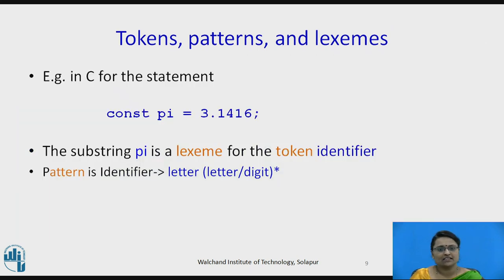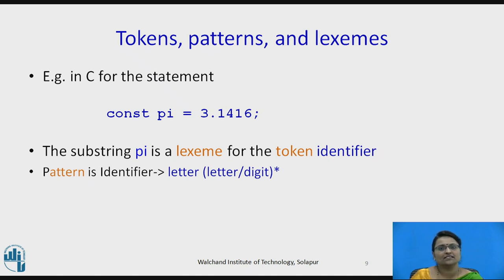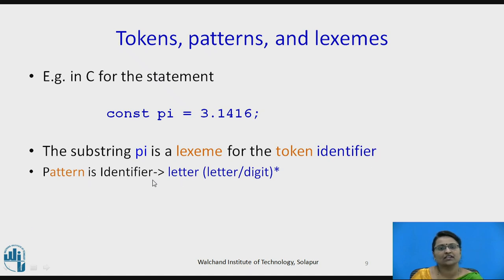Consider this C statement: const pi equals 3.1416. In this, the substring pi is called a lexeme. It generates the token identifier. The pattern it matches is the identifier pattern: letter followed by (letter | digit)*. These are the simple relationships between tokens, patterns and lexemes.